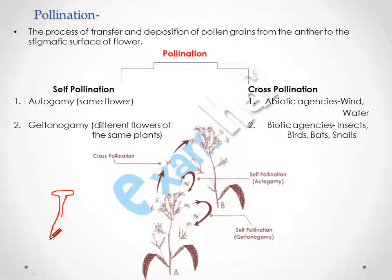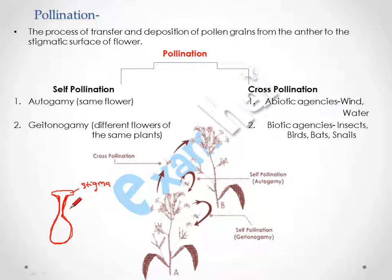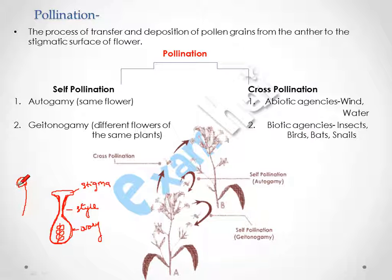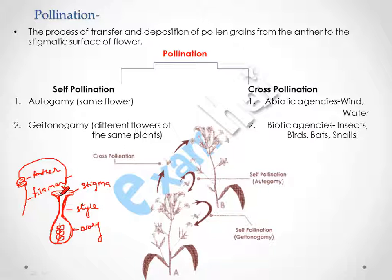Here I am drawing a diagram of the female reproductive part of an angiosperm. This is the ovary, this is the stigma, this is the style, and inside the ovary are the ovules. This is the male reproductive organ — the filament and anther. Pollen grains are produced in the anther and transferred to the female stigmatic part. This process is called pollination.